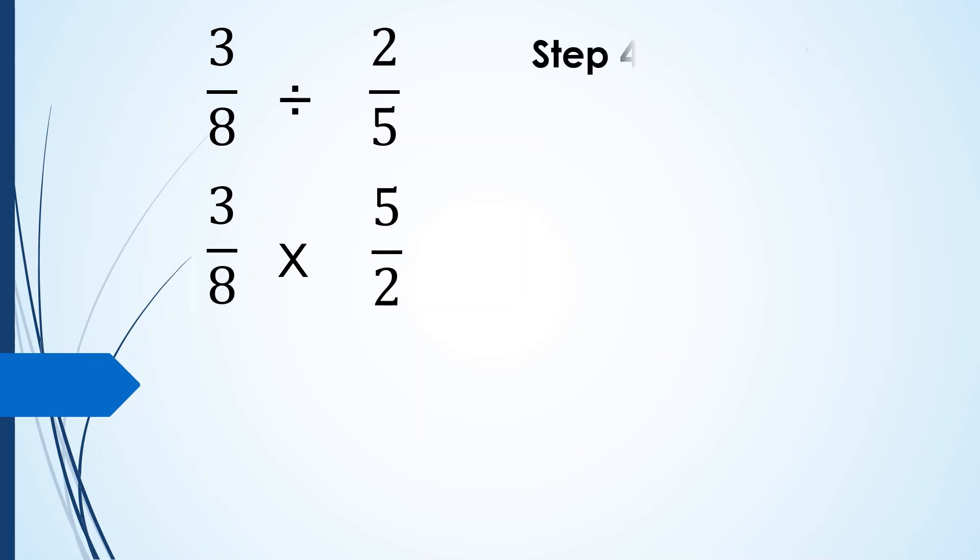Then, for step 4, we are now going to multiply or apply the process of multiplication of fractions. So that will be equal to 3 times 5 is equal to 15 over 8 times 2 is equal to 16.